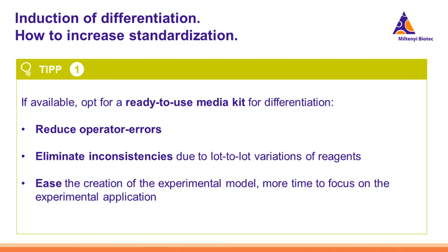How can we increase the standardization of differentiation? The first advice is to opt for ready-to-use media kits for differentiation if they are available. This reduces operator errors, eliminates inconsistencies due to lot-to-lot variation of reagents and components, and in general eases the creation of the experimental model so that we can focus more on the actual experimental application rather than on generating our cellular model.